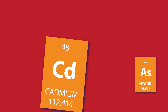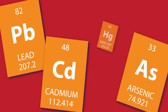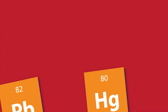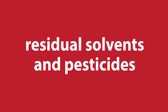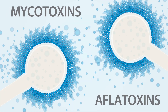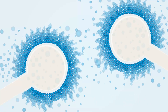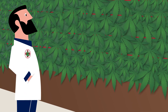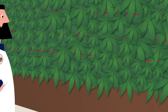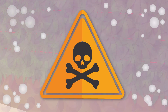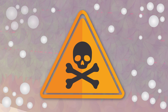In addition to potency profiles, cannabis testing is also used to identify a variety of contaminants, including heavy metals, residual solvents, and pesticides. Microorganisms, mycotoxins, and aflatoxins are a particular concern because the ideal growing conditions for cannabis are also ideal for the growth of harmful bacteria and fungi. But all contaminants can be very dangerous for patients with compromised immune systems.